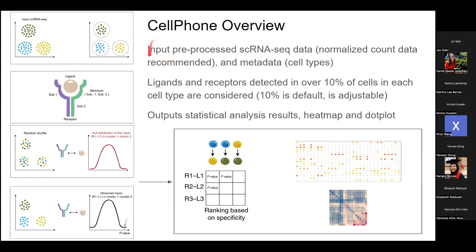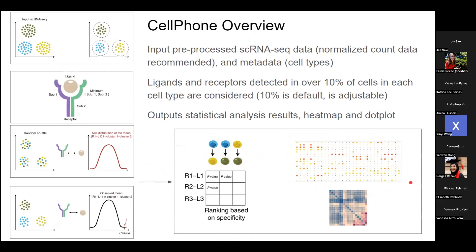You also have to include metadata, so all your cells need to be annotated with cell type already. CellPhone will then detect ligands and receptors that are present in over 10% of cells for each cluster — that 10% is the default but you can adjust it. It then does some statistical analysis and outputs text files, a heat map, and a dot plot.